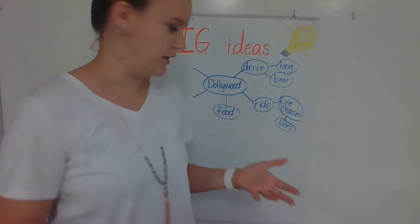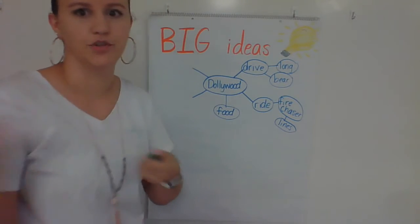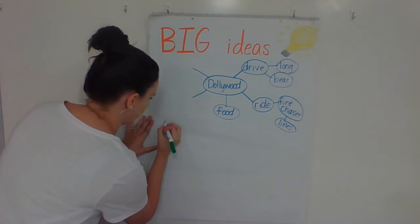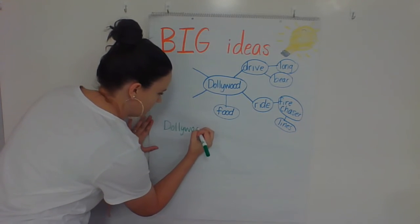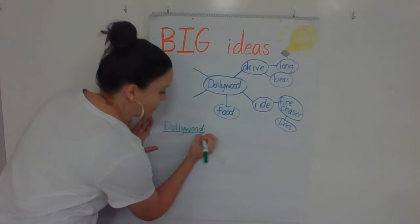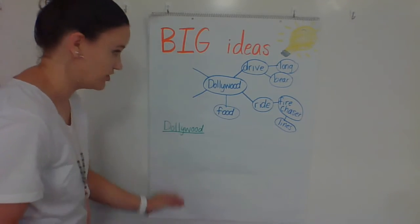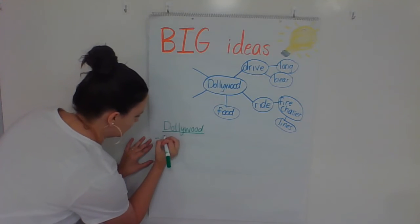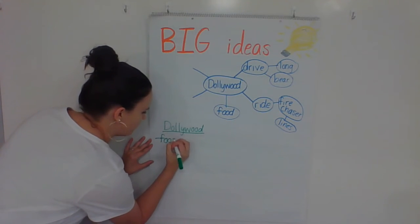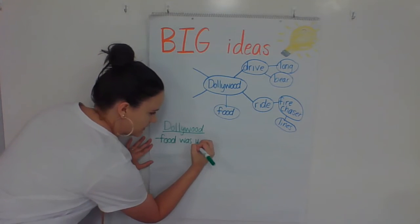So, big ideas, think of an idea, expand on it. You don't have to use a map. You can make a list. So, still, if I'm going to write about Dollywood, I might just write Dollywood at the top of my paper. And then I might just start listing. List all the things. So, I might say something like food was yummy.